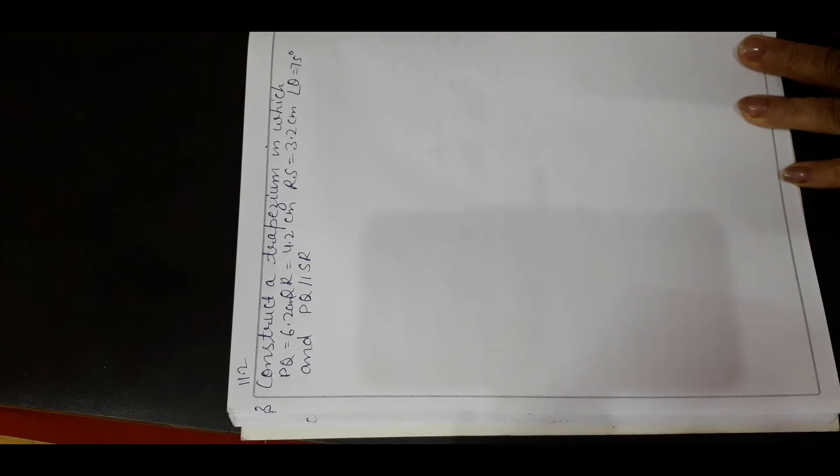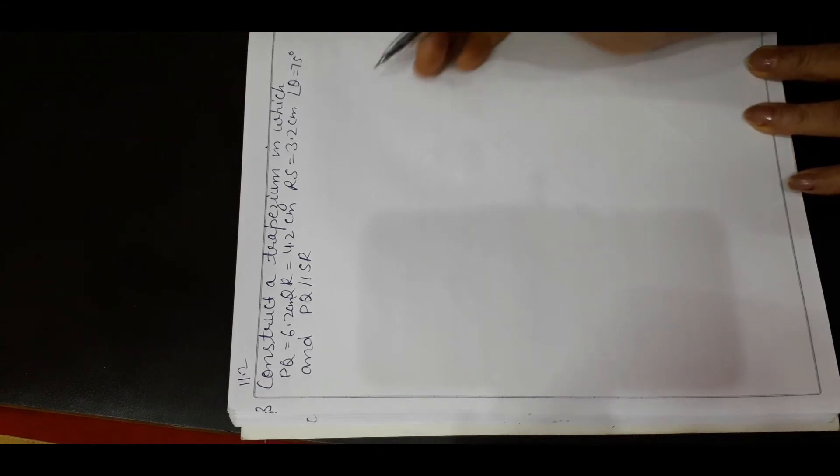This is question number 8 of exercise 11.2: construct a trapezium in which PQ equals 6.2 cm, QR equals 4.2 cm, RS equals 3.2 cm, angle Q equals 75 degrees, and PQ is parallel to SR.